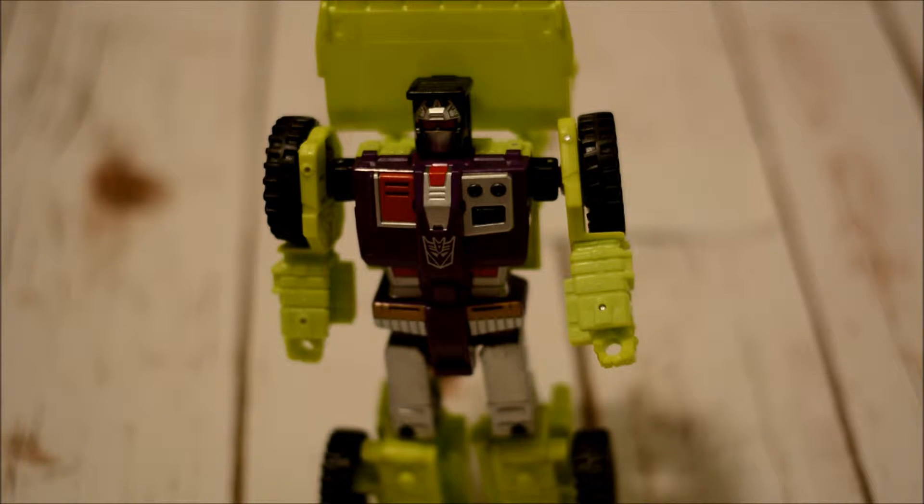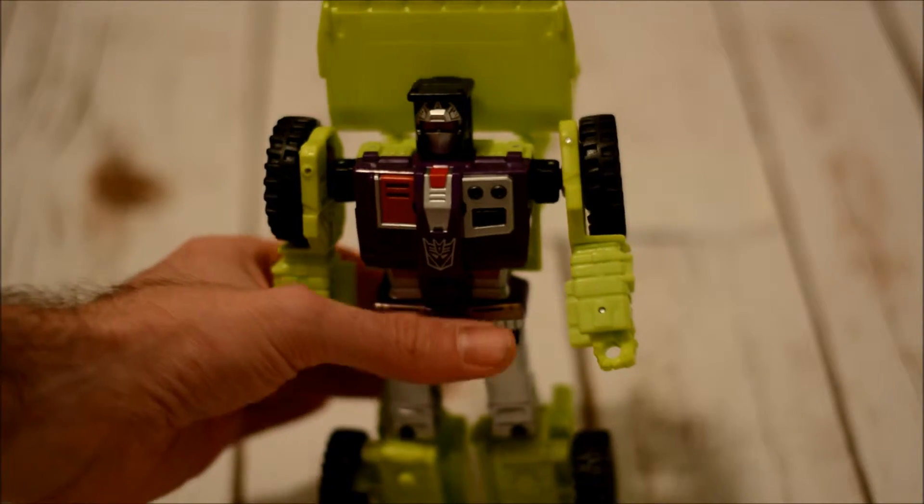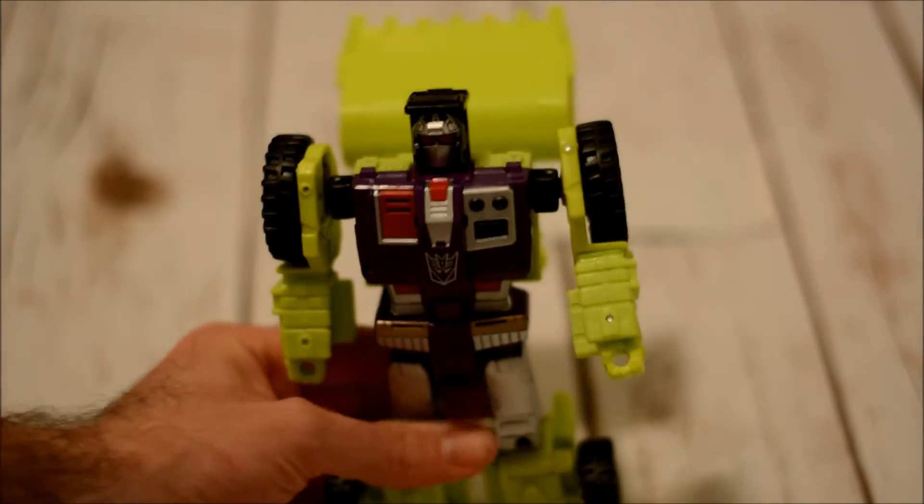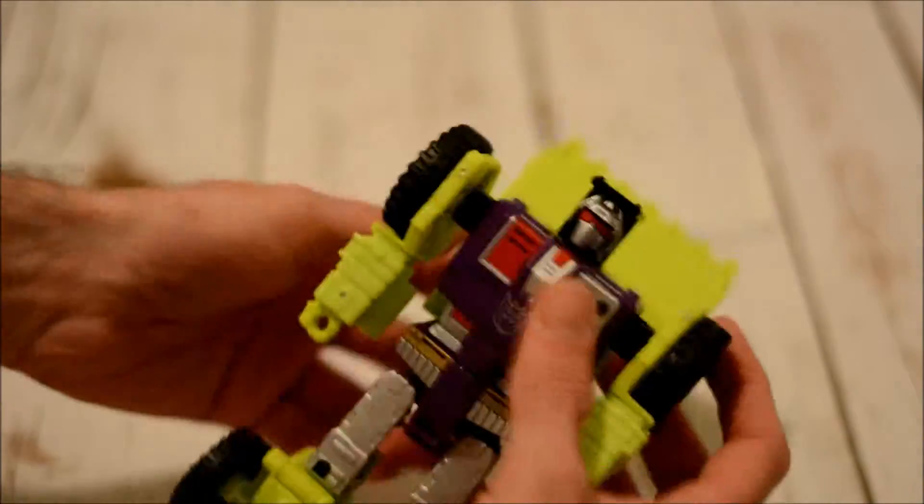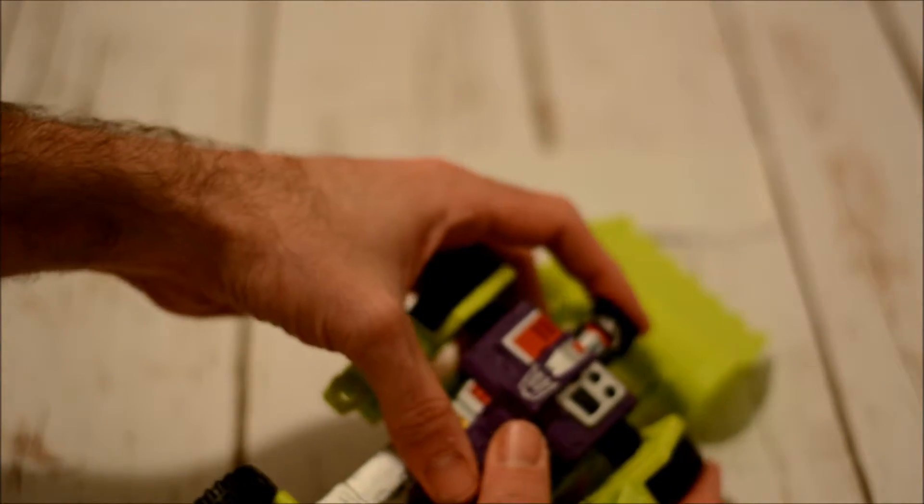So let's look at limb mode. Scrapper becomes one of the legs for Devastator. Let me transform him back to alt mode. Head back to alt mode, head back in, robot fists.